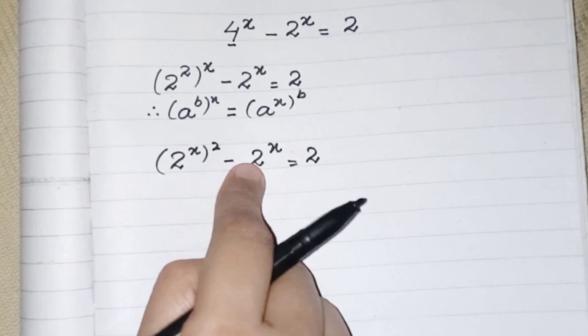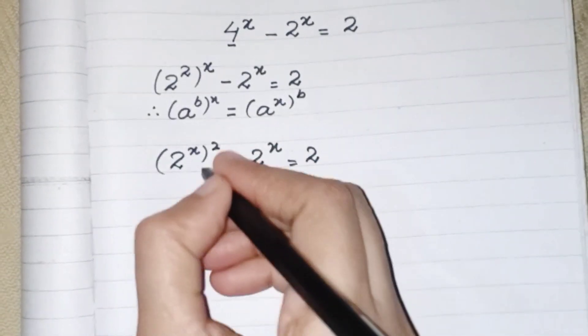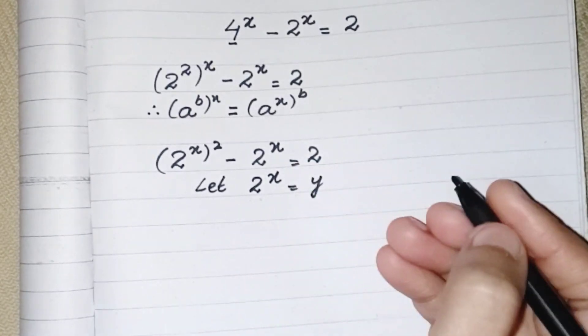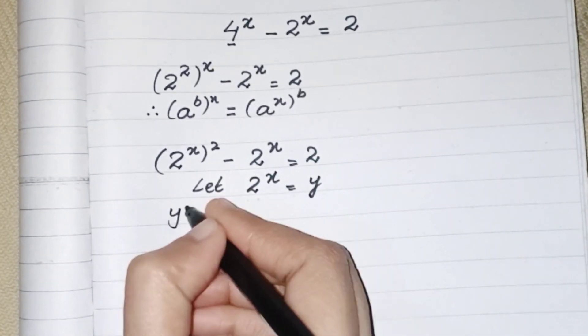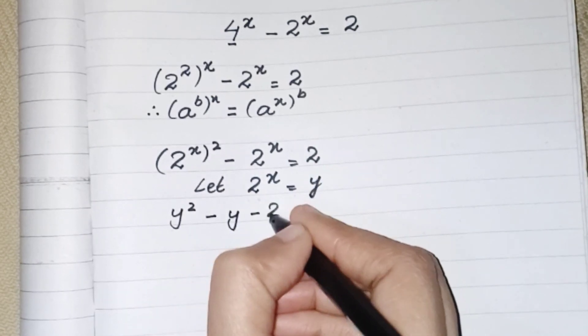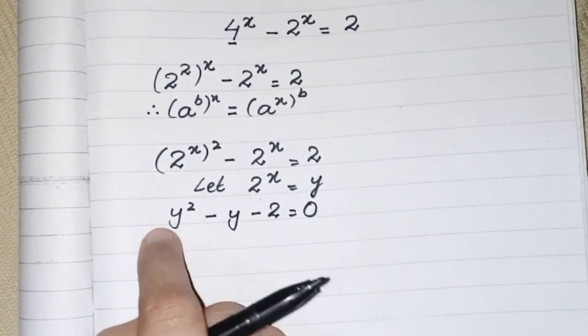So we can write it like, let 2^x be equal to y. So what we have: y^2 - y, and minus 2 comes to this side, and the whole equation will be equivalent to 0.